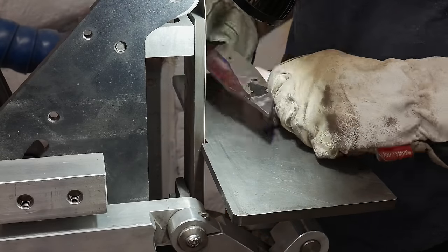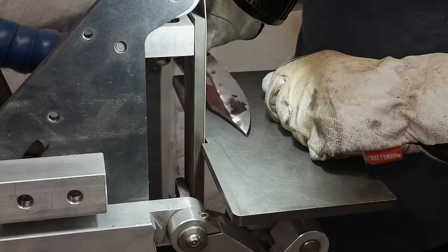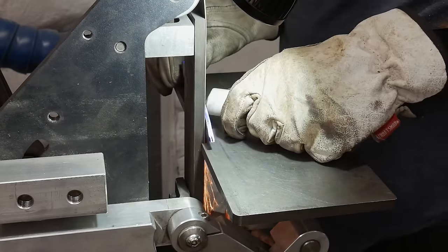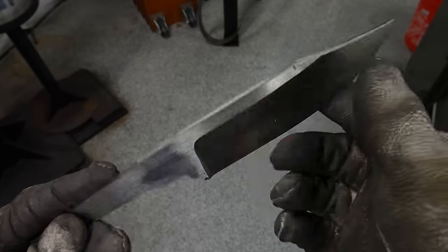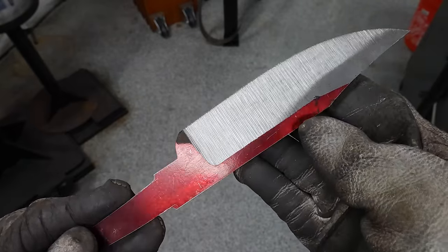My pre-heat treat grinding is done with a 36 grit belt. I like leaving some flats on the blade at this point to help me keep it all straight. The goal here is really just some bulk material removal and rough alignment of the bevels.